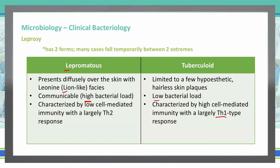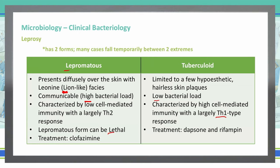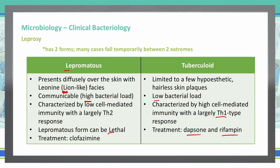The lepromatous form is the most lethal form — so think lepromatous: lion-like, lethal. To treat them, we treat them differently. For the tuberculoid form, we're going to treat with dapsone and rifampin, whereas with the lepromatous form, we're going to use clofazimine.